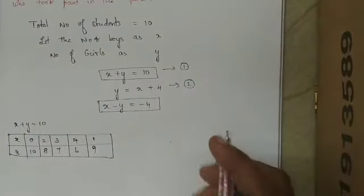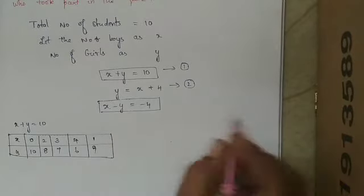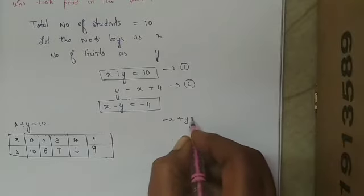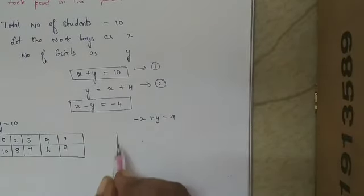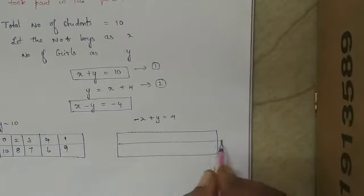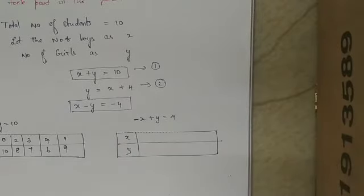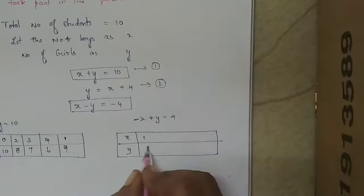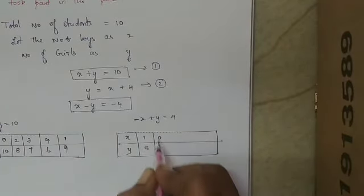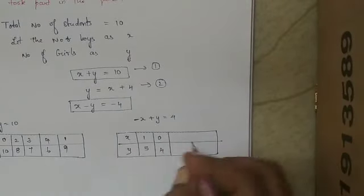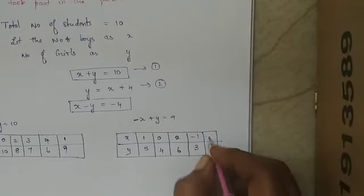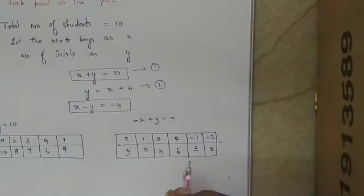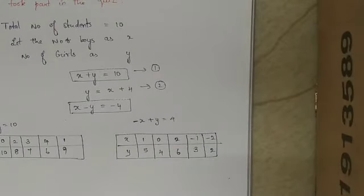Now let us do the same for the second equation. We can rewrite x minus y equals minus 4 as y equals x plus 4, so we can substitute x values and find y. Tabular column for the second equation: if x is 0, y is 4; if x is 1, y is 5; if x is 2, y is 6; if x is minus 1, y is 3; if x is minus 2, y is 2. Now we have the tabular columns for both equations and can represent them on the graph.